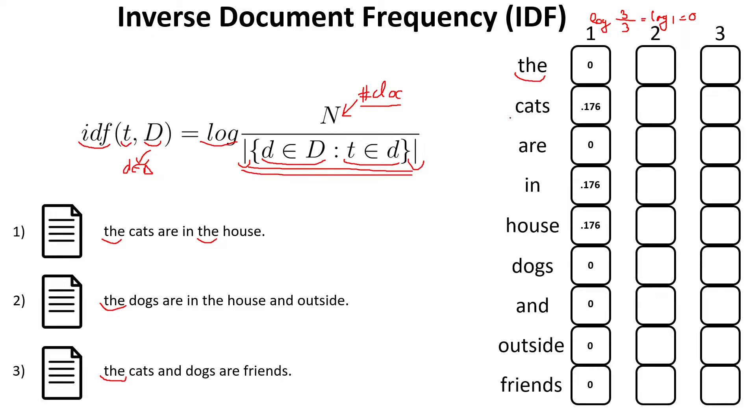And also, let's try to compute it for the word cats. So, we have here logarithm of 3 over... And the word cats appear once here and once in the last document. So, we have logarithm of 3 over 2, which is approximately equal to 0.176. And we can apply the IDF formula to compute the IDF value for the rest of the word found inside the first document. And also, the vectors for the second document and also for the third document.